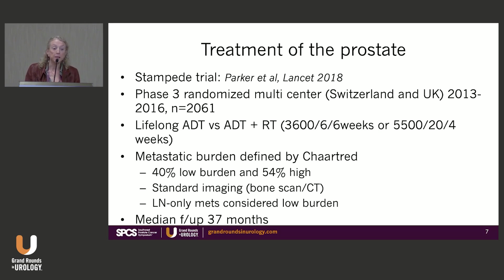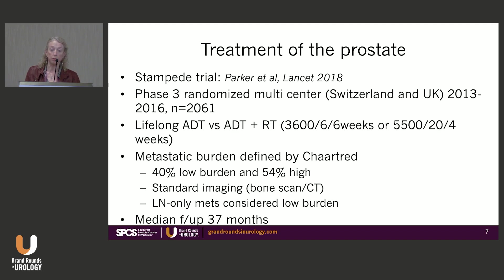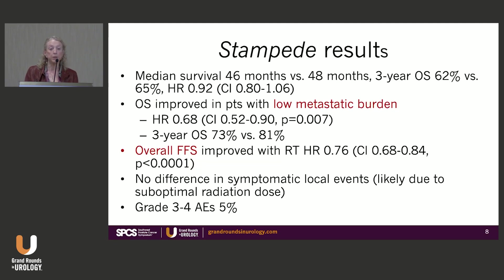Metastatic burden in the Stampede trial was defined by CHAARTED criteria. Forty percent of the men had low burden disease and 54% high burden. They used only standard imaging — bone scan and CT — and if it was lymph node-only metastases, they were considered low burden. Results were reported with a median follow-up of three years.